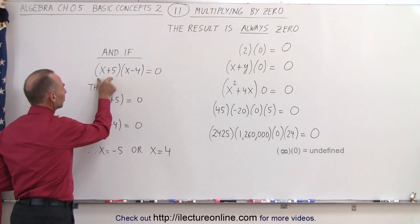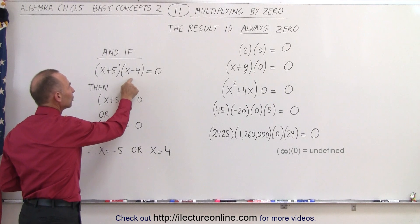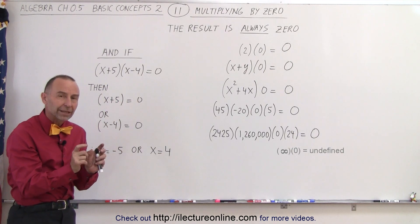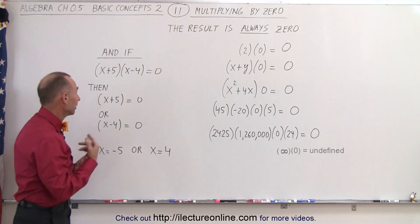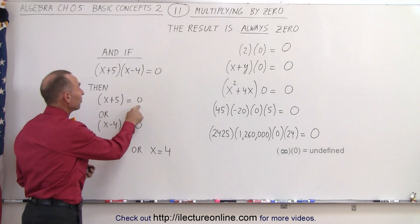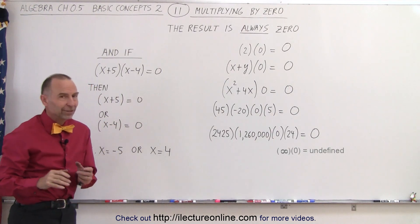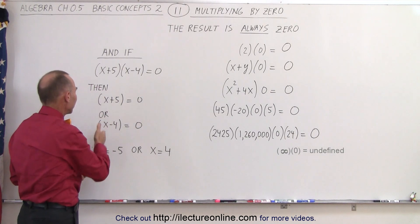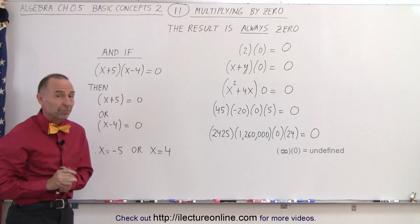What if we have the quantity x plus 5 multiplied times the quantity x minus 4, and we know that it's equal to zero? When we multiply two numbers together and the result is zero, that means one of the two must be a zero. That means either x plus 5 must equal zero, or x minus 4 must equal zero. They cannot together be equal to zero, because when x takes on a certain value, x plus 5 and x minus 4 cannot be the same number.